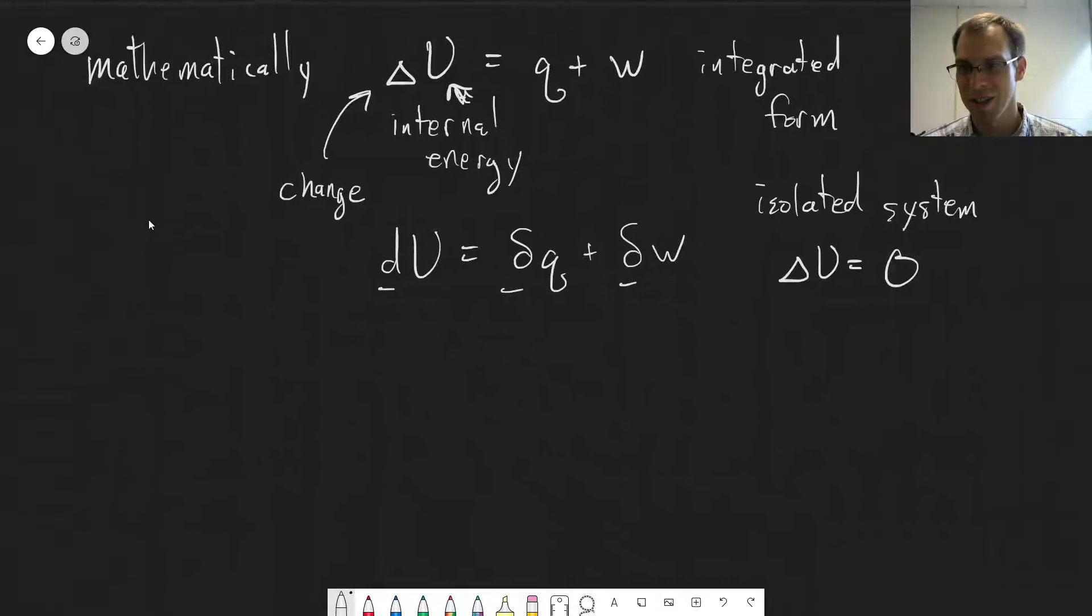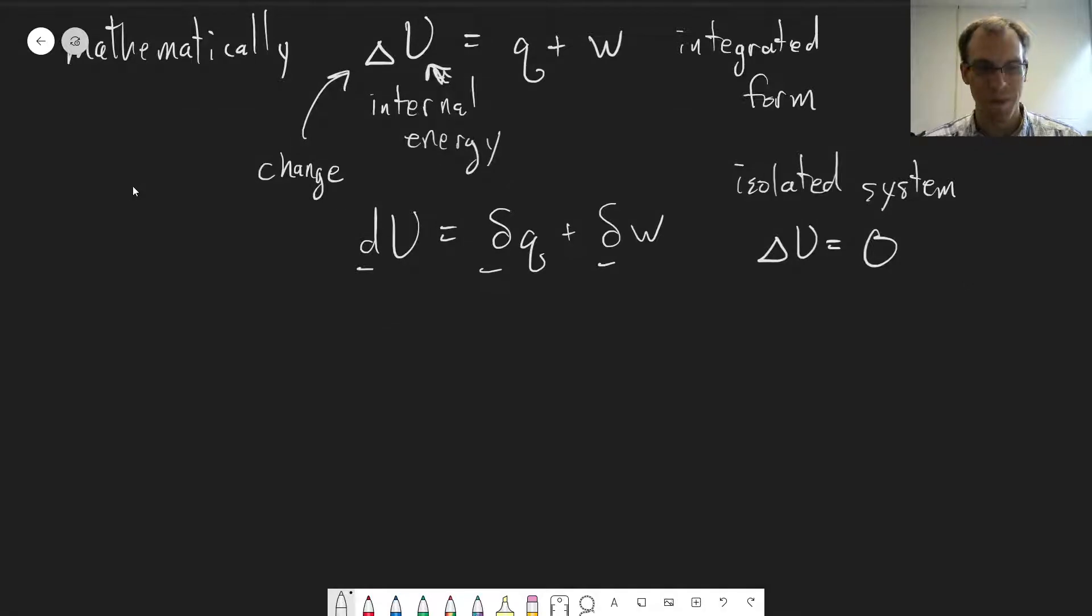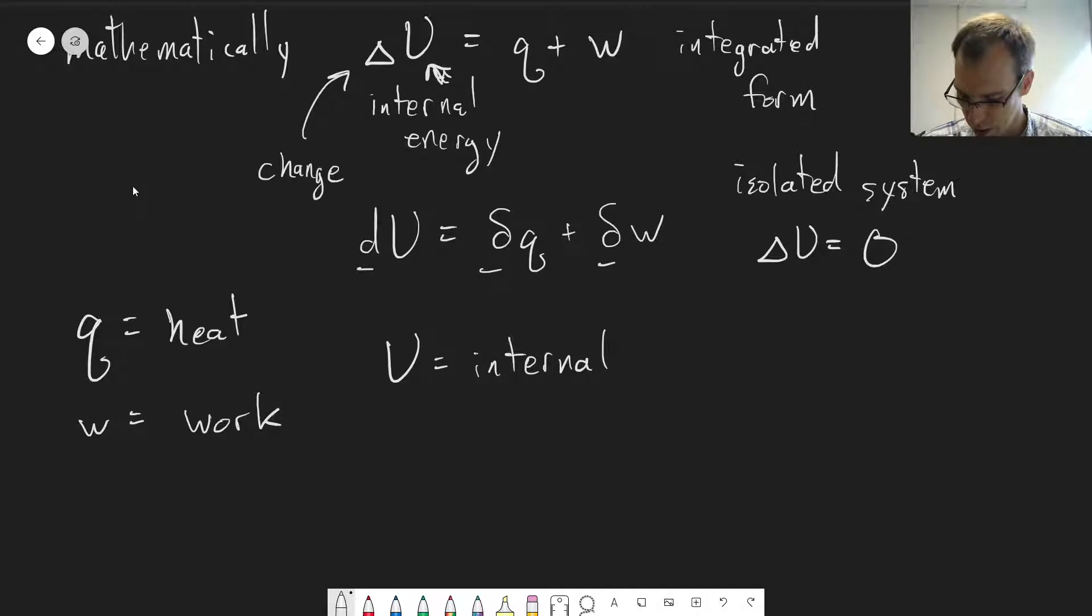So I've defined internal energy, or mentioned internal energy here. Q is what we call heat. W is work. And we'll define these more specifically. So first, let's start with U, internal energy. And here we're just going to define everything that's showing up here. So U is internal energy, or we can think of this as the ability of a system to do work.